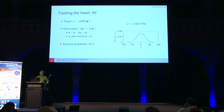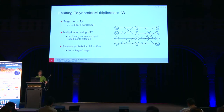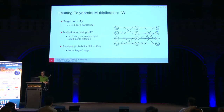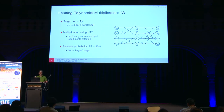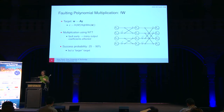We can also fault the computation of W — the polynomial multiplication feeding into C. The NTT is an FFT over a prime field using butterfly networks. Faulting the left side (input) spreads the fault to all output coefficients, while faulting the right side (output) affects only a few coefficients. More changed coefficients means higher probability the faulted signature gets rejected, giving success probabilities between 25% and 90% depending on the exact fault location. Overall, this multiplication is a larger target than the hashing.